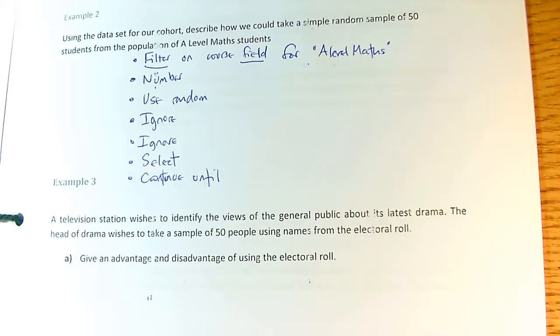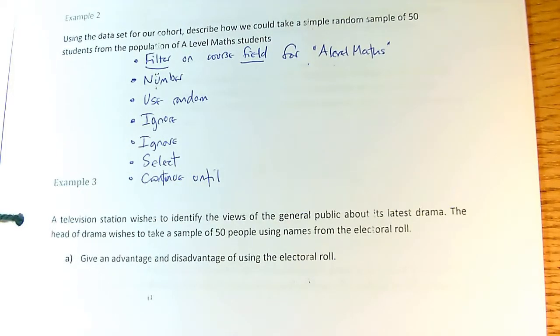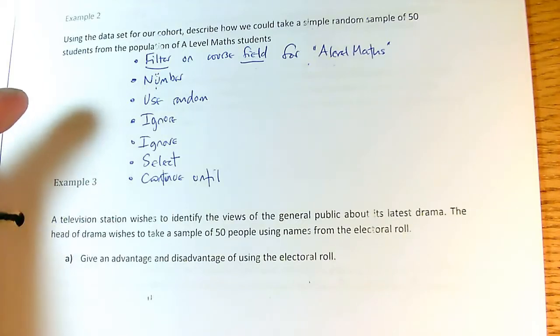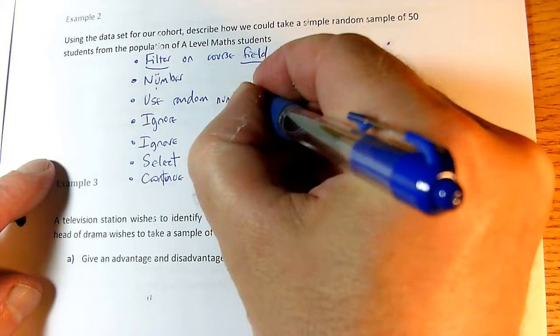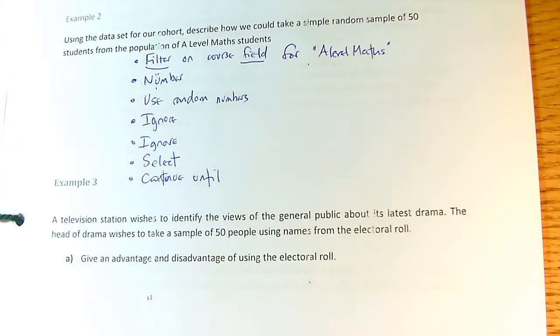So you've got notes on the previous page of your booklet of all of these steps. You may want to pause the video and think about how these statements should continue. Think about how we do numbering, how we use random numbers, what kind of random numbers we use. See if you can complete those statements and then unpause it.